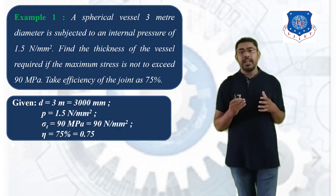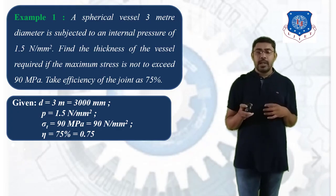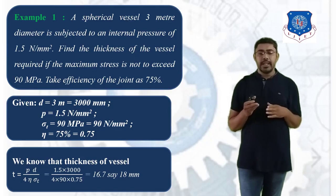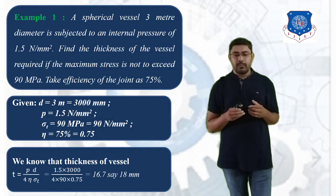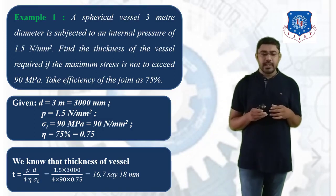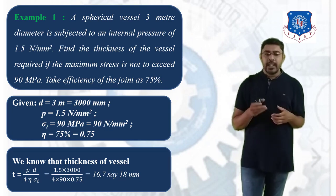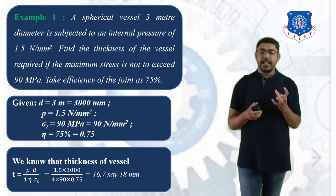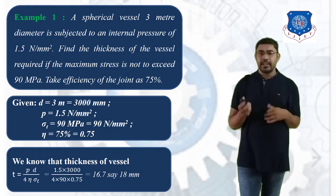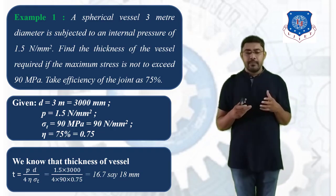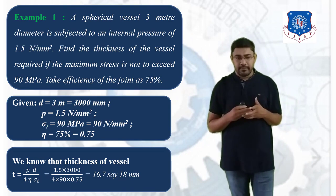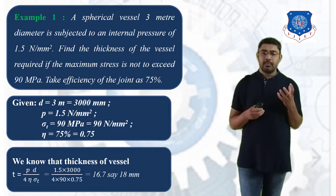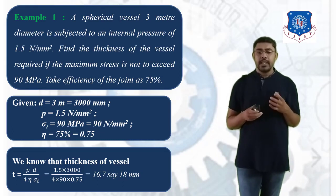We have to find the thickness of this vessel. Using the thickness equation: T = P·D / (4·eta·sigma T). Substituting values — P = 1.5, D = 3000, eta = 0.75, sigma T = 90 N/mm² — we get the thickness of this spherical vessel as approximately 16.7 mm, say 18 mm. So according to the given problem, the thickness of the spherical cell is 18 mm.